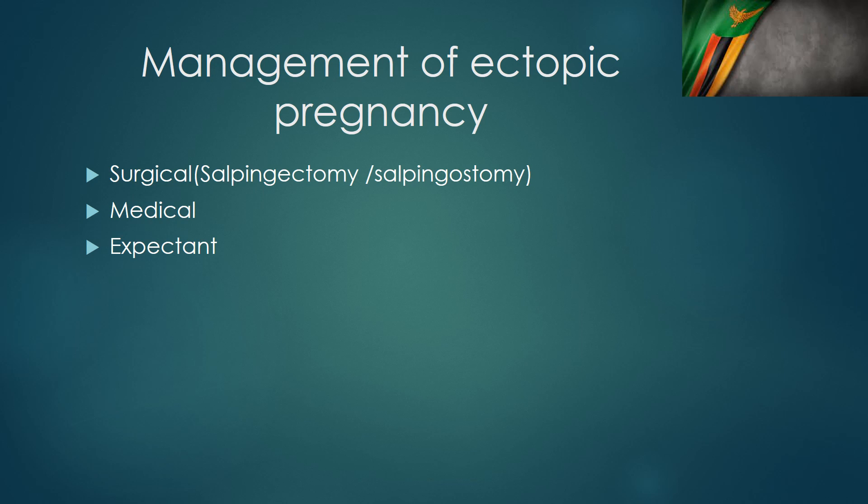Once a diagnosis of ectopic pregnancy is made, we explain the diagnosis to the patient and obtain consent for surgery. We resuscitate the patient with IV lines and fluids, obtain the patient's blood group, cross-match blood, and do a full blood count — particularly checking the hemoglobin, as most patients have been bleeding before reaching hospital. The theatre and blood bank must be informed promptly, as blood can be hard to obtain in our setting.